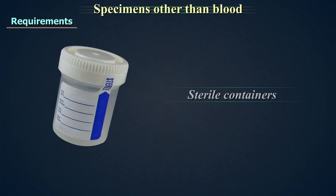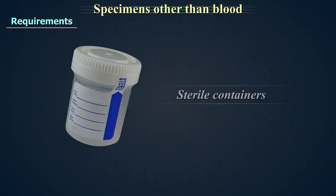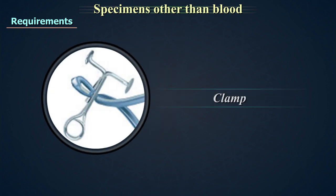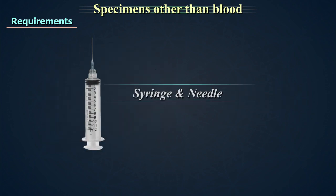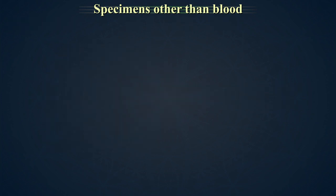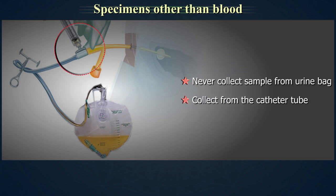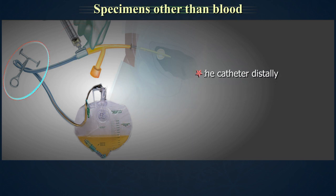Requirements: sterile containers, spirit swab, clamp, syringe, and needle. Never collect a sample from the urine bag. Collect from the catheter tube after cleaning it with a spirit swab.